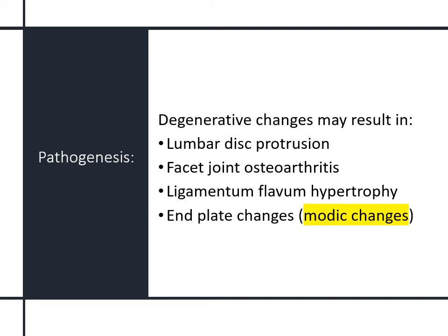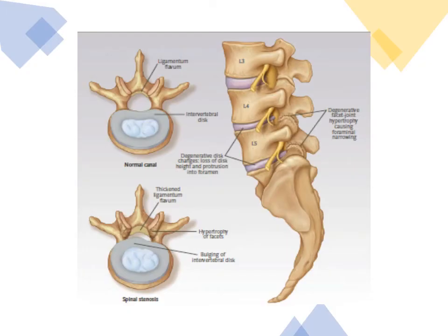The pathologies here are similar to what we see in the cervical spine. There will be loss of water content of the soft tissue resulting in lumbar disc protrusion or bulging, facet joint osteoarthritis with ligamentum flavum hypertrophy. There is also a certain pathological entity affecting the vertebral end plates called Modic changes, which we will come to in a minute. Additionally, there will be a reduction in the height of the disc, bulging, and hypertrophied ligamentum flavum.